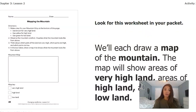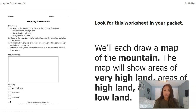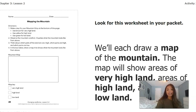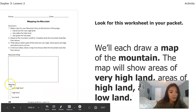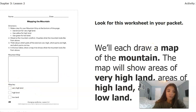In your packet you have a worksheet called 'Mapping the Mountain.' We'll each draw a map of the mountain in our packets. The map will show areas of very high land and areas of high land. First, we're going to work on making a key for our mountain map at the bottom of the page where it says 'map key.' We're going to use brown to show very high land, yellow for high land, and green to show low land.